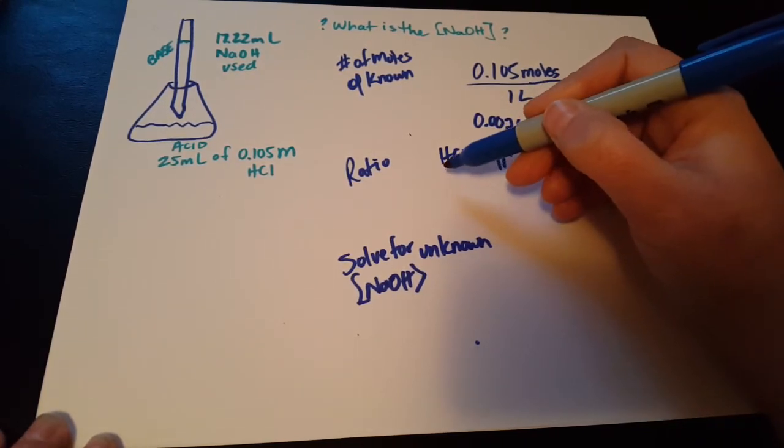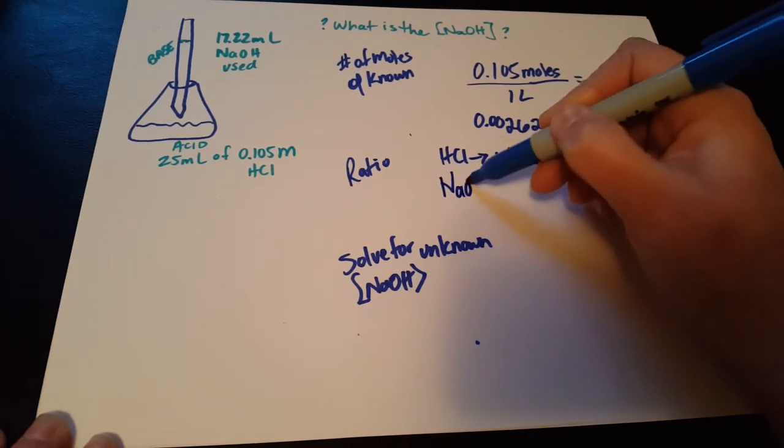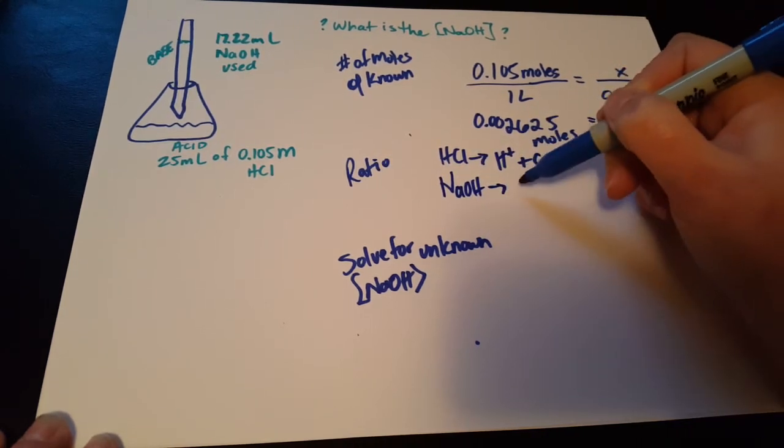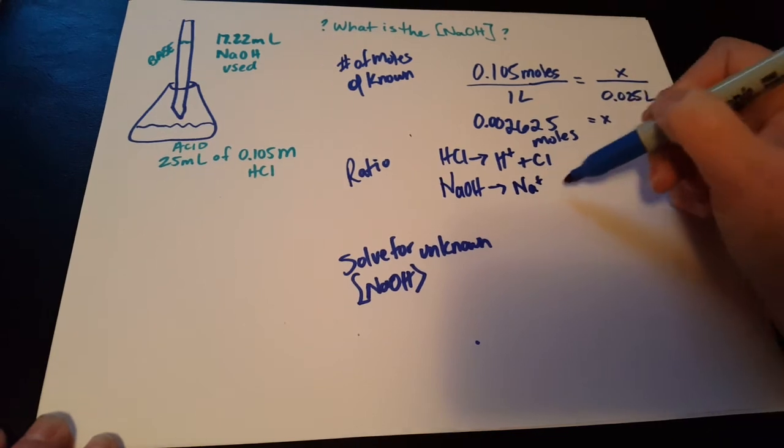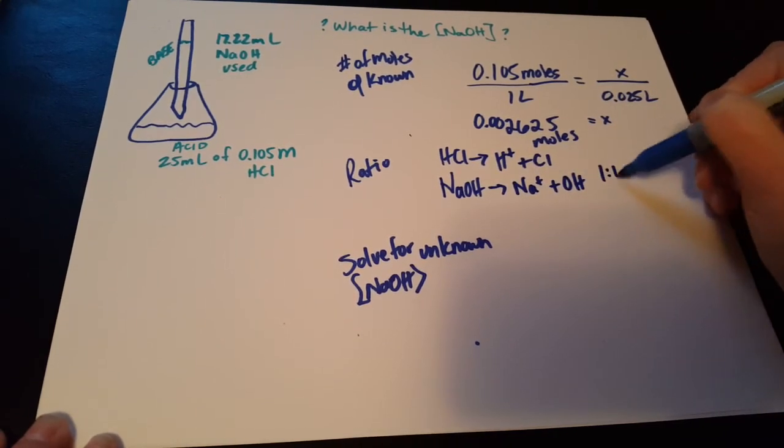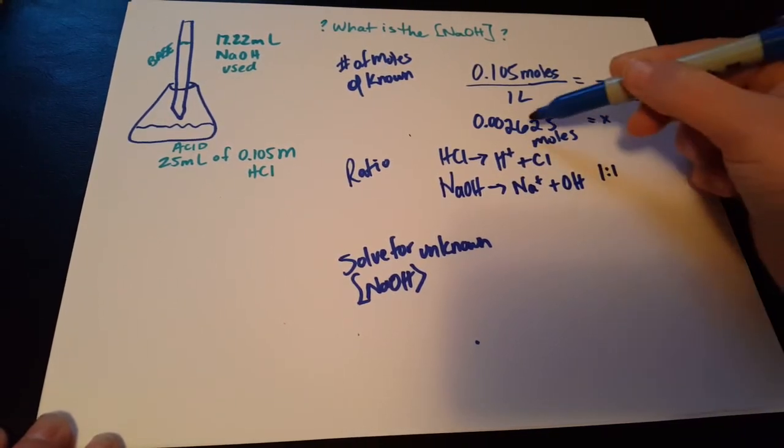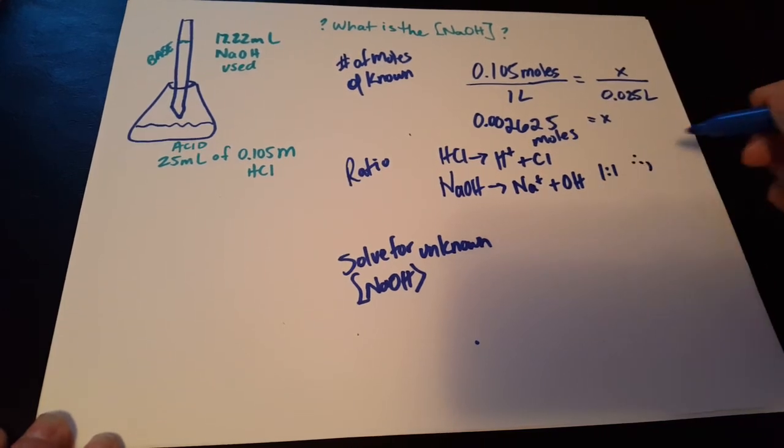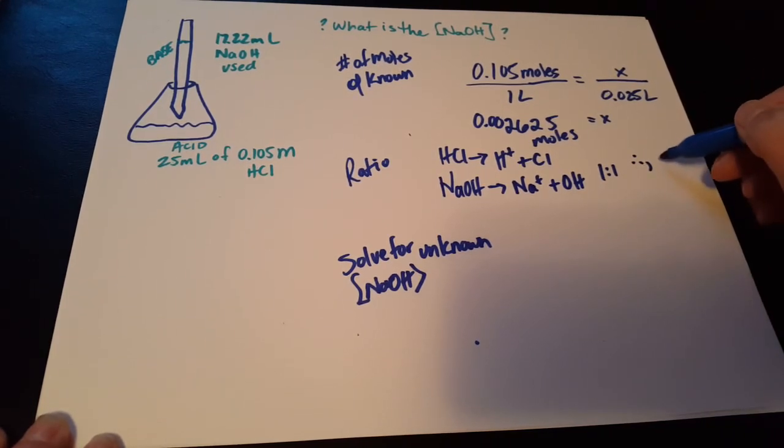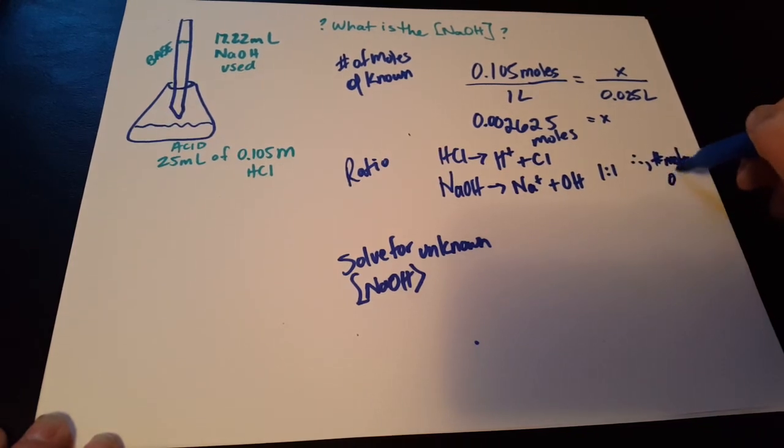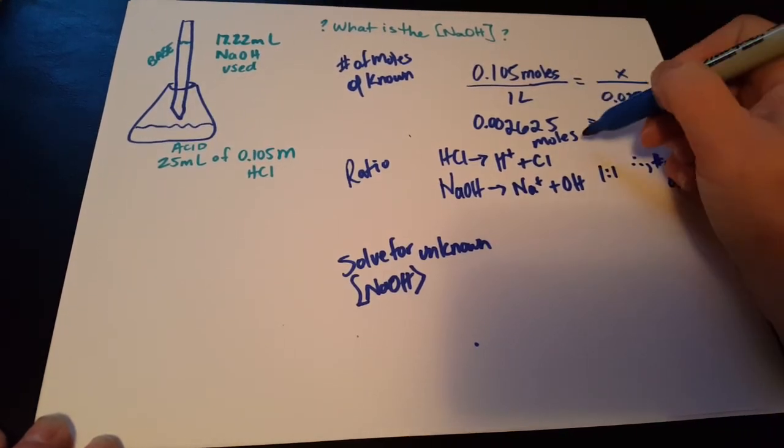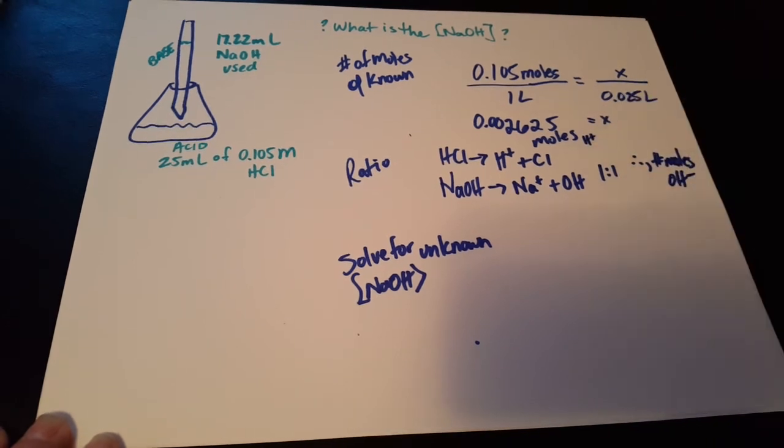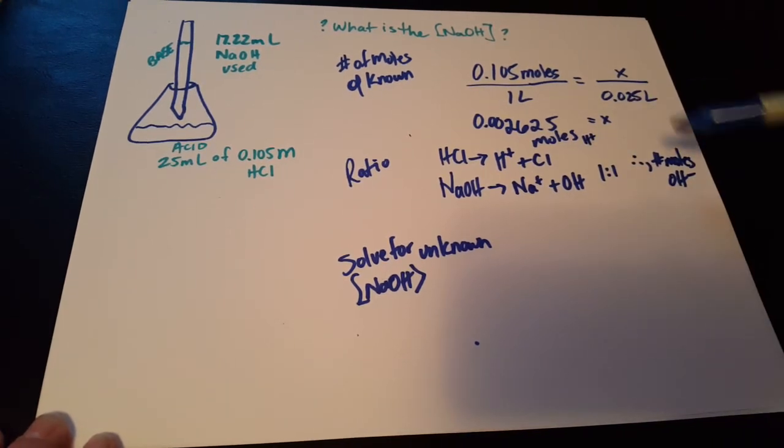And then our sodium hydroxide, which is in the burette, is also dissociating in a one-to-one ratio. So we've got that nice one-to-one ratio. We can assume then that the number of moles of OH- will equal the number of moles of H+ at the equivalence point, which is very close to the endpoint in these titrations. We'll get 0.02625 moles of OH-.